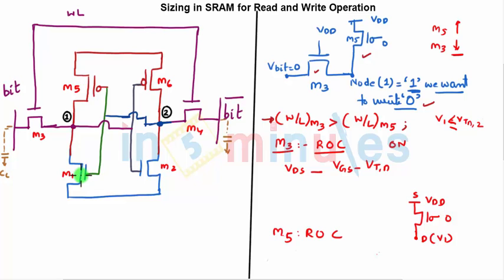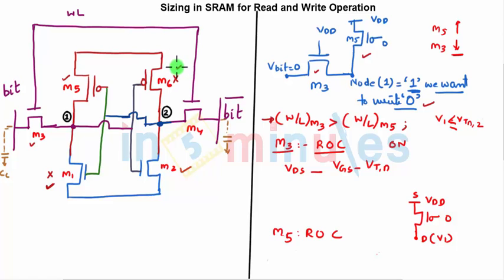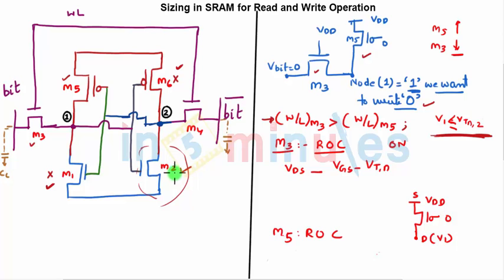For the write to succeed, M5 must turn off and M1 must turn on to pull node 1 toward ground. For M1 to turn on, node 2 must go to 1, which requires M6 to turn on and M2 to turn off. So the node voltage at node 1 must drop below the threshold voltage of M2 — it should be less than or equal to VTN of M2. Once this happens, M2 turns off, allowing the new state to latch.